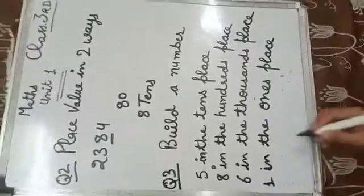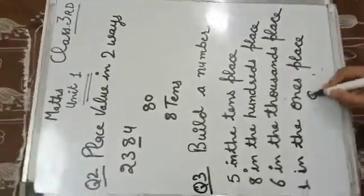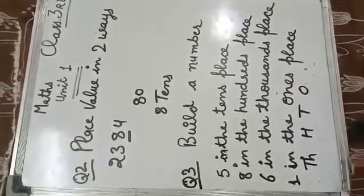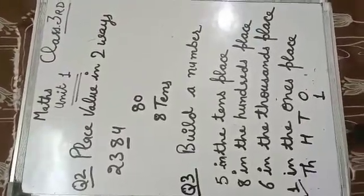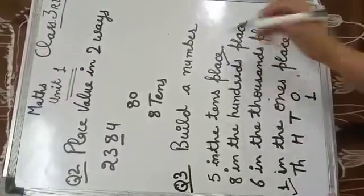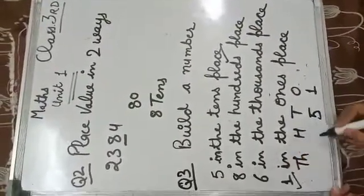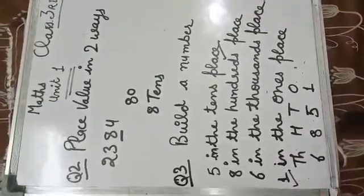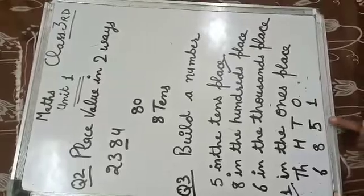So firstly we write: ones, tens, hundreds, and thousands. One is on the ones place. Five is on the tens place. Eight is in the hundreds place. Six is in the thousands place. So the answer is six thousand eight hundred fifty-one.